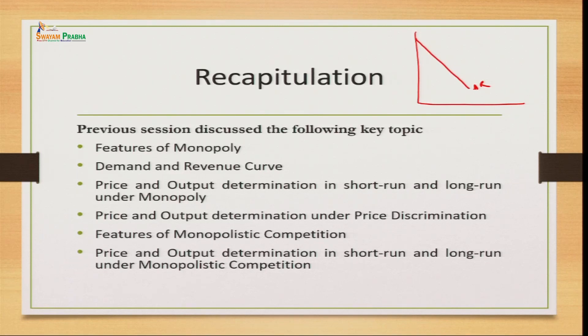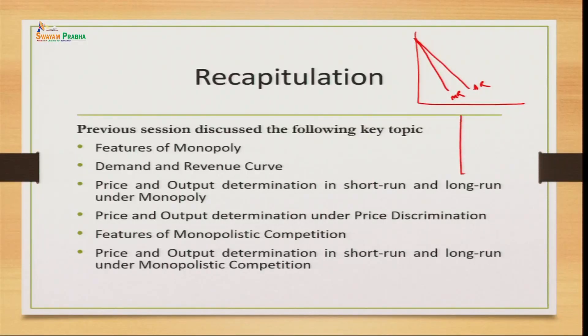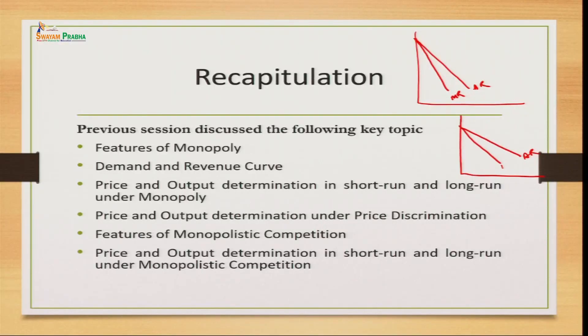A higher change in prices causes a lesser change in demand. Below the average revenue curve lies the marginal revenue curve. In contrast, the monopolistic competitive market has a highly elastic demand because there are many firms and the products they sell are close substitutes of each other. The demand curve for the monopolistic competitive market is again downward sloping, but it is a little flatter, representing that demand is highly elastic. Below it again lies the marginal revenue curve.